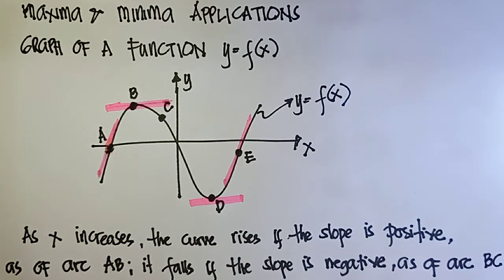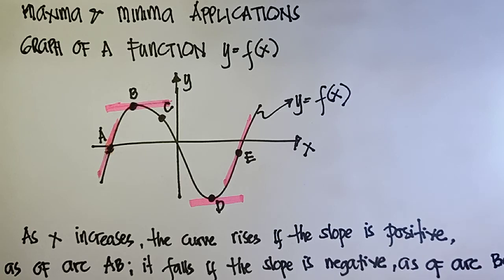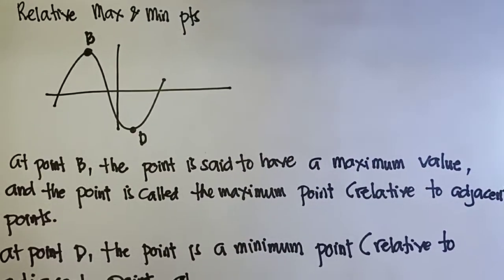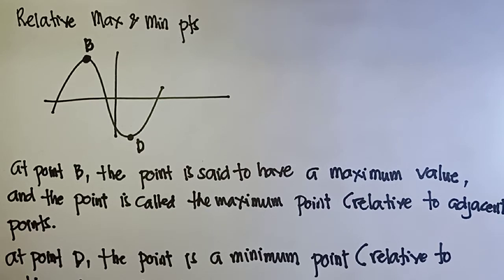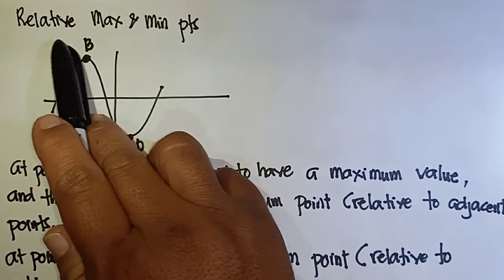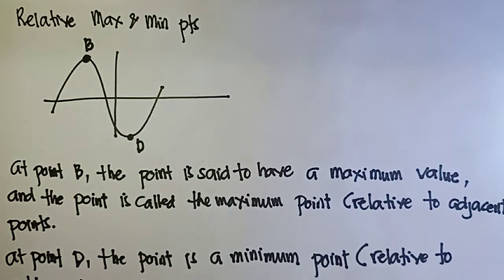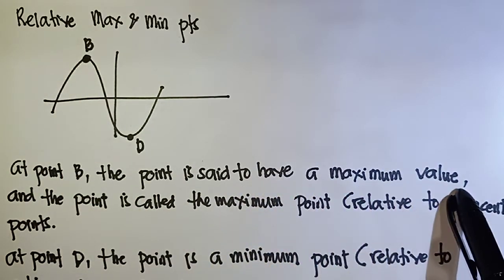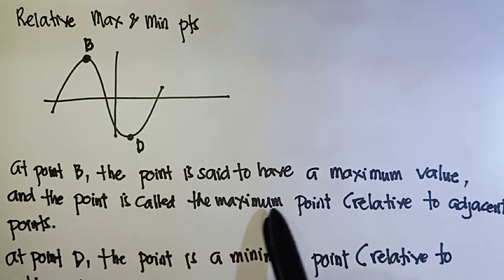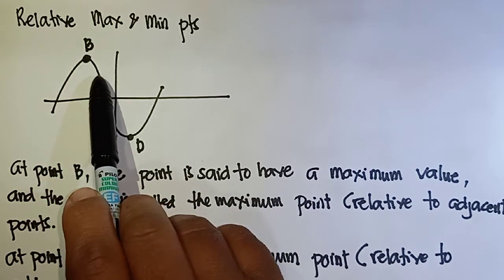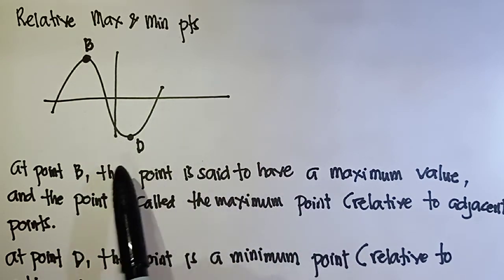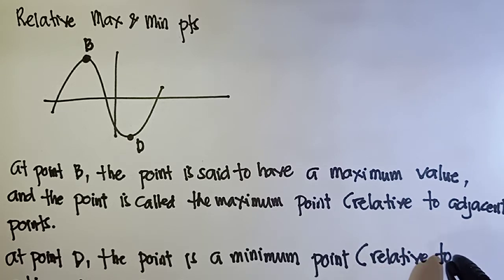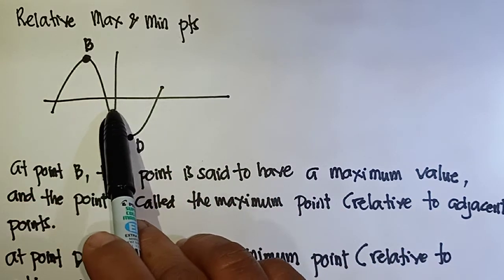We have relative maximum and minimum points. At point B, the point is said to have a maximum value and is called the maximum point relative to its adjacent points. At point D, the point is a minimum point relative to its adjacent points.